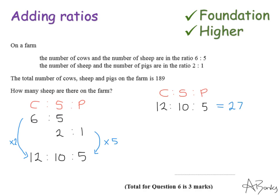And they've told me that the total number of cows to sheep to pigs on the farm is 189. So to get from 27 to 189, I am multiplying by 7. So if I multiply all my numbers by 7, that's 84, 70 and 35.